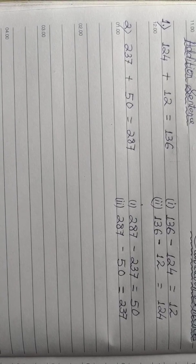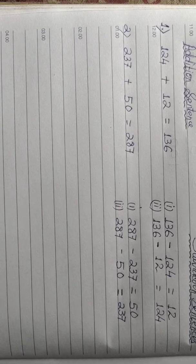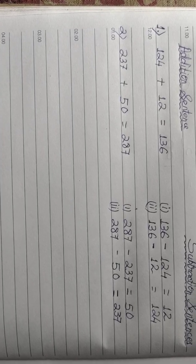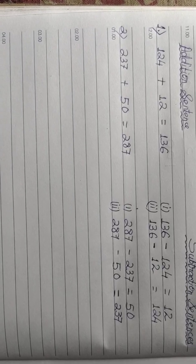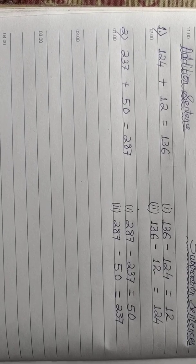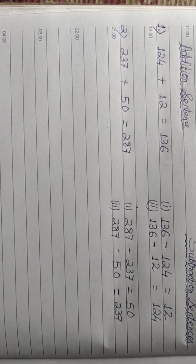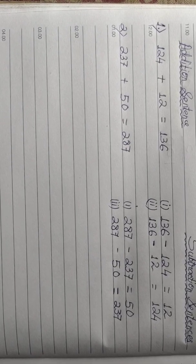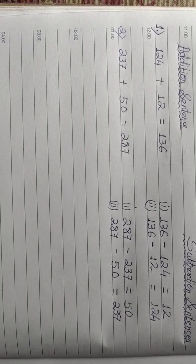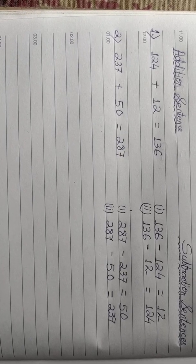So 287 minus 50 equals to 237 is the second subtraction sentence. Two subtraction sentences from one addition sentence. Two examples of addition sentences were given, and from those two addition sentences, two subtraction sentences each were made. I hope you have understood. Now we are going to do the exercise.